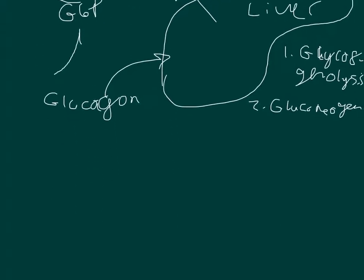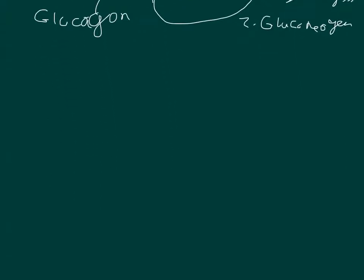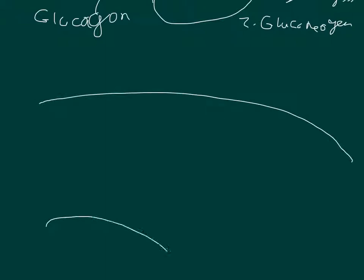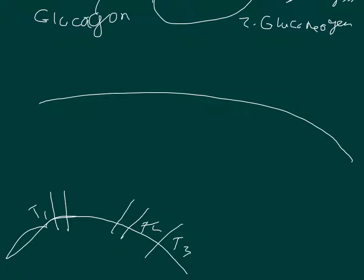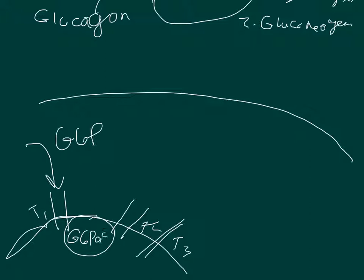With glycogen storage disease 1, or von Gierke's, you have two types. Inside the cell, we have a cell membrane and the endoplasmic reticulum. There's a T1 transporter, a T2, and a T3 transporter. Glucose-6-phosphate is supposed to go in here, and then glucose-6-phosphatase converts it into glucose. The glucose comes out via T3, and the phosphate comes out separately.